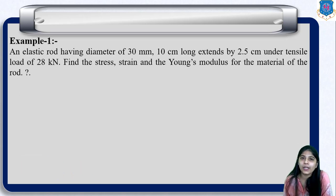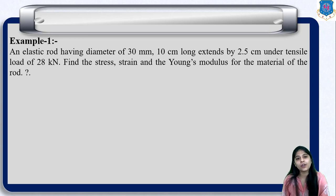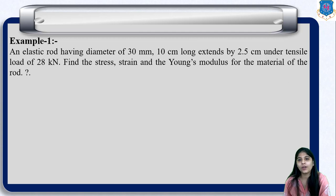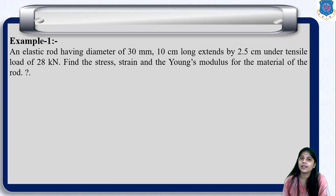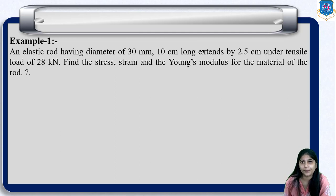In example 1, an elastic rod has a diameter of 30 mm, is 10 cm long, and extends by 2.5 cm under a tensile load of 28 kN. We need to find the stress, strain, and Young's modulus for the material of the rod.